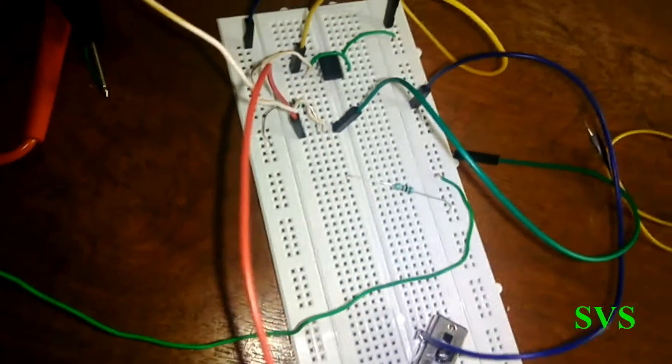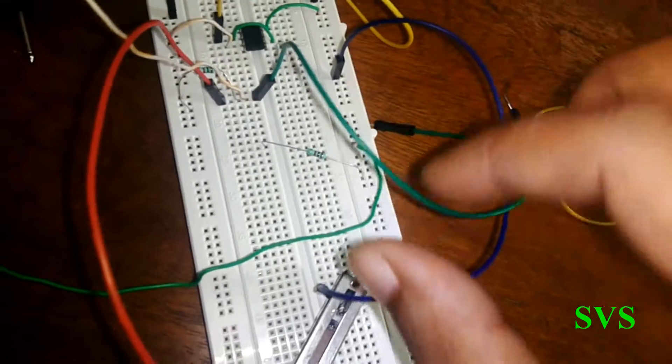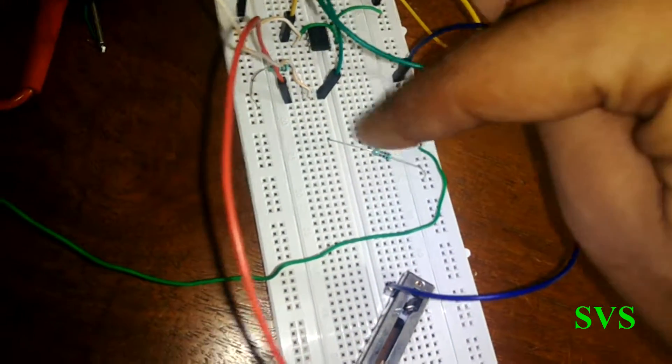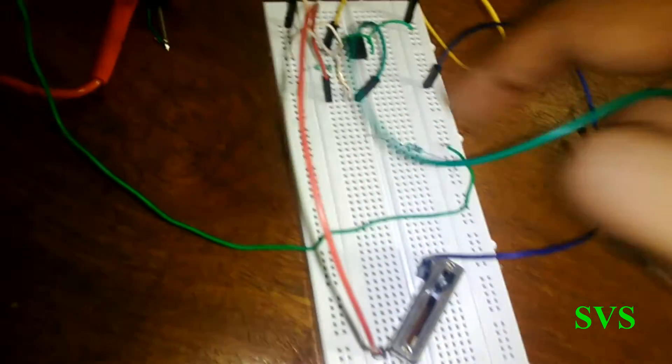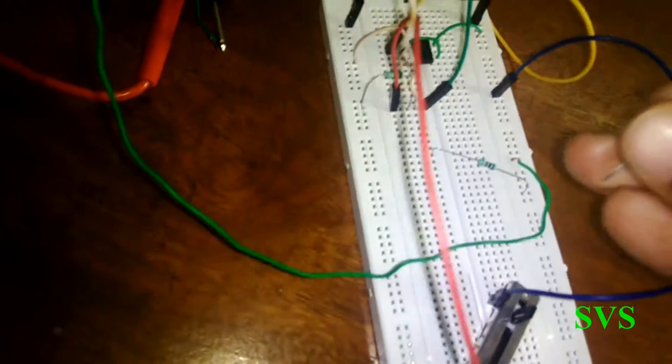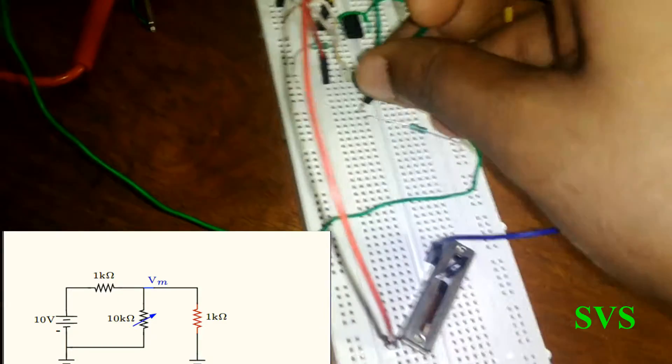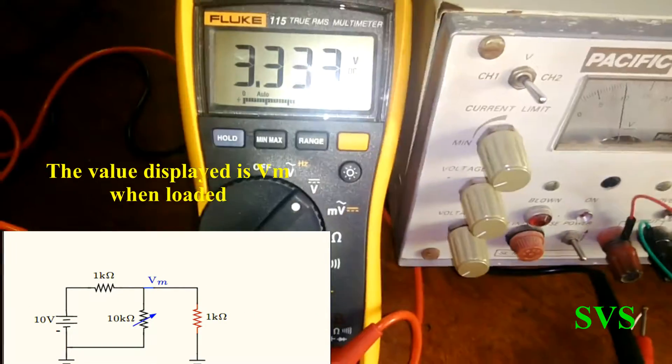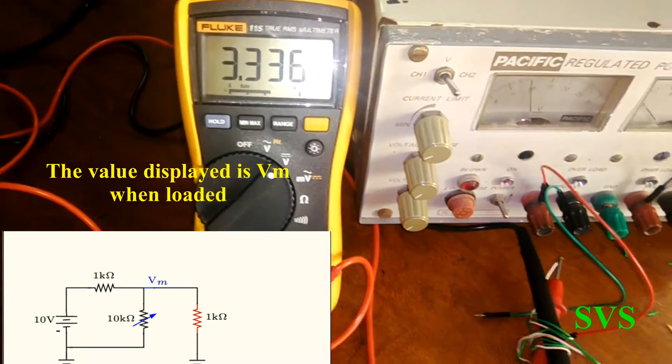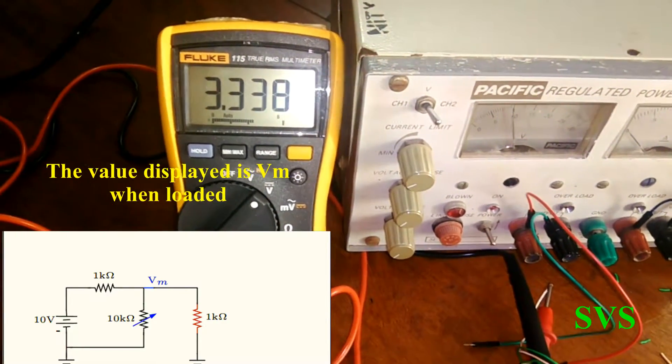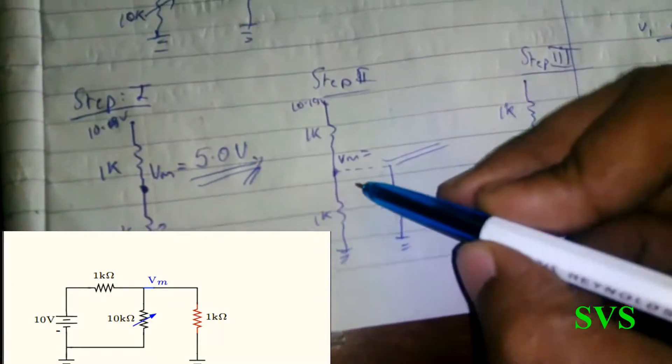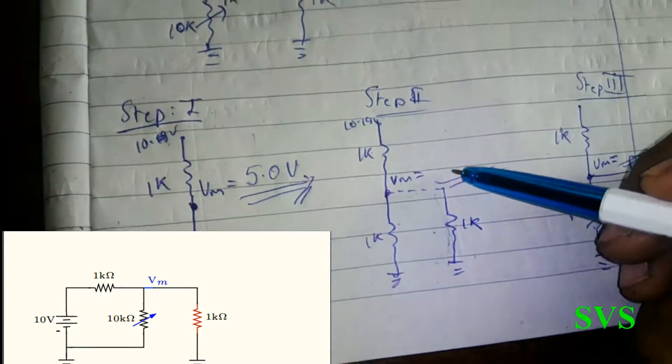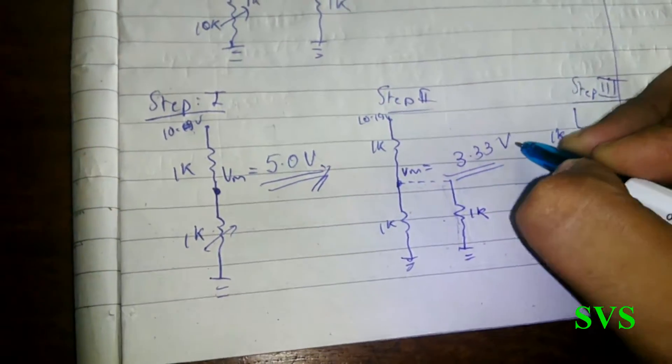Let's try to load that point. This is the load of 1k which is already grounded there. When we load it, let's see what happens. As soon as we plug it, the voltage drop changes - the voltage of the node changes to 3.33. So this 5 volt is no more 5 volt, it comes to 3.33 volts.